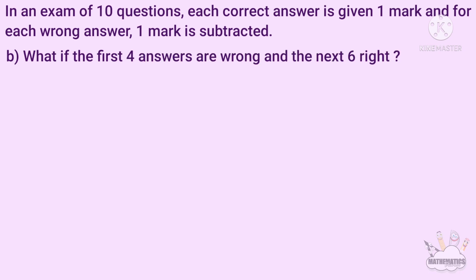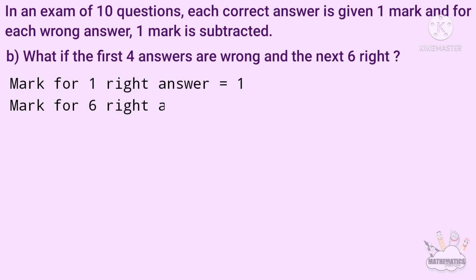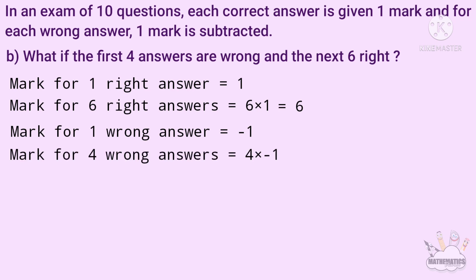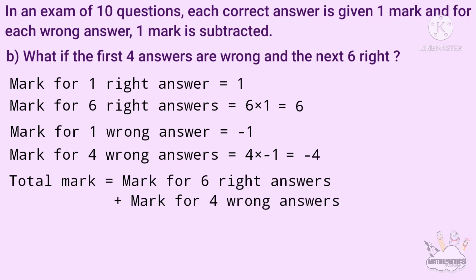What if the first 4 answers are wrong and the next 6 right? Mark for 1 right answer is 1, mark for 6 right answers is 6 into 1, that is 6. Mark for 1 wrong answer is minus 1, mark for 4 wrong answers is 4 into minus 1, that is minus 4. The total mark is mark for 6 right answers plus mark for 4 wrong answers, that is 6 plus minus 4.